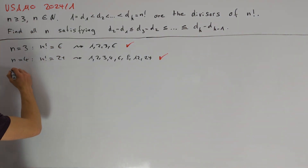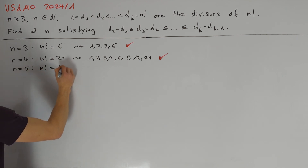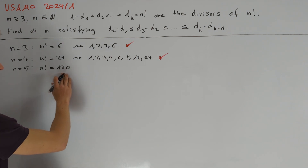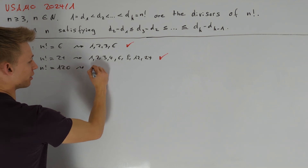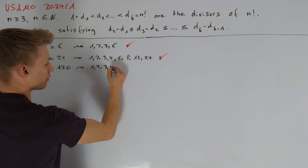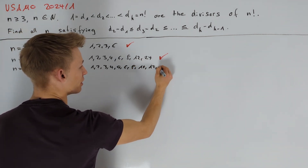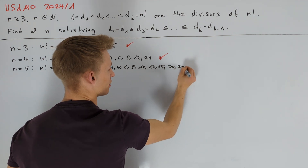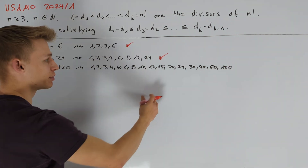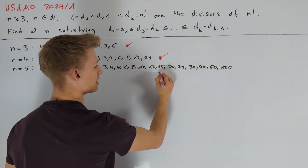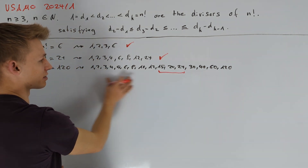Now let's try out a third example, namely n equals 5. Here n factorial equals 120. To get the divisors of 120 we take the divisors of 24 and those divisors times 5. We get 1, 2, 3, 4, 5, 6, 8, 10, 12, 15, 20, 24, 30, 40, 60, and 120. We see that the difference of 15 and 20 is 5, but the difference of 20 and 24 is 4. Therefore this is not a solution.